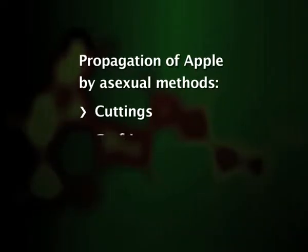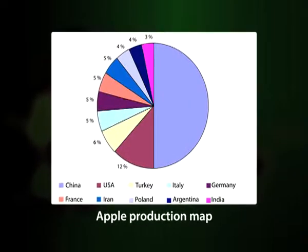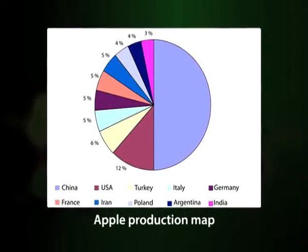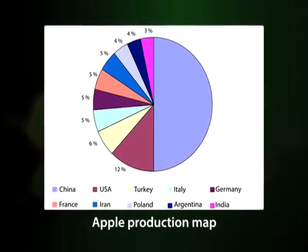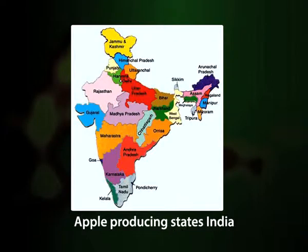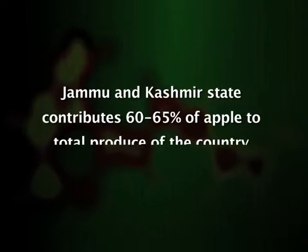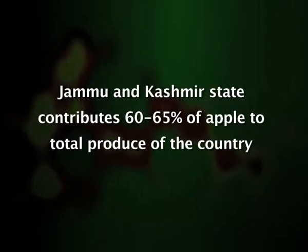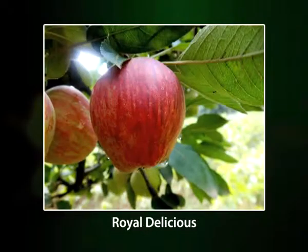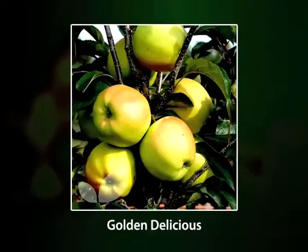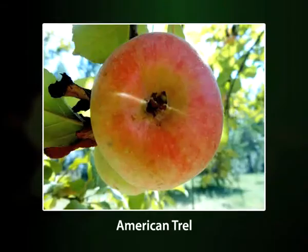It must be propagated asexually by cuttings, grafting, budding, tissue culture, etc. The major apple producing countries are China, USA, Turkey, France, Germany, Italy, Poland, Russia, and India. In India, apple is grown mainly in Jammu and Kashmir and Himachal Pradesh. The Jammu and Kashmir state, owing to its suitable climate, contributes 60 to 65 percent of apple to the total produce of the country. Some of the major apple cultivars grown in India include Red Delicious, Royal Delicious, Golden Delicious, Granny Smith, American Trail, etc.